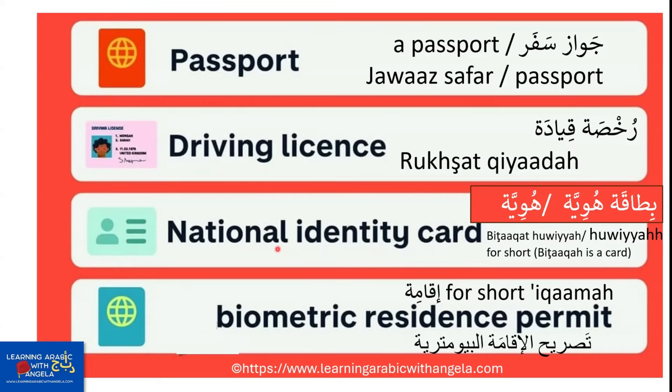We can also add 'national': bitaqatu huwiyya al-wataniya — national identity card. For short, you can simply say huwiyya.